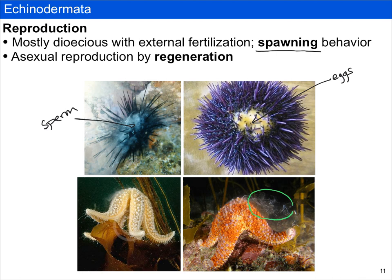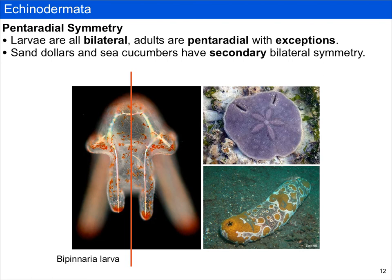Echinoderms are also capable of regeneration — as long as you have an arm and part of the central disc, they can grow a whole new body. Although echinoderms have pentaradial symmetry, their larvae are bilaterally symmetrical. Most adults are pentaradial, but there are exceptions: the sand dollar shown in the top right here has an almost bilateral symmetry if you draw a line through it. Sea cucumbers have clearly reinvented bilateral symmetry, which is called secondary bilateral symmetry.